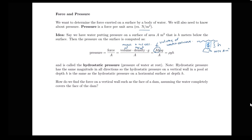So we have volume A·h times density ρ — where ρ is the density of water — times gravity g. This A·h·ρ·g divided by A gives us that pressure equals density times acceleration due to gravity times depth. This pressure is called the hydrostatic pressure — the pressure of water at rest.